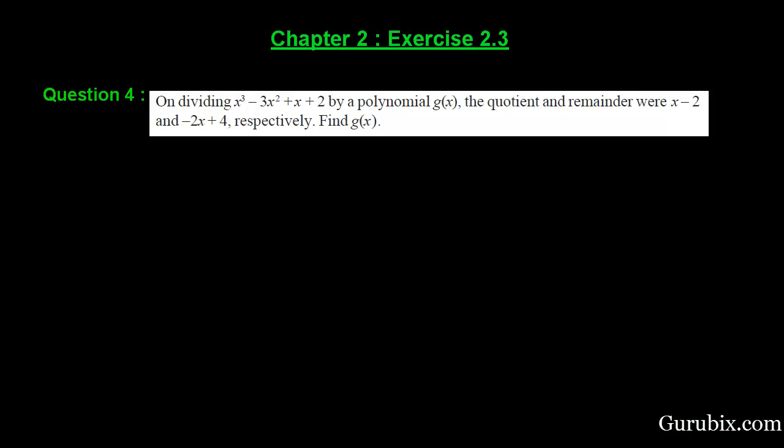Welcome friends. Let us solve question number 4 of exercise 2.3 of chapter 2. The question says: on dividing x cubed minus 3x squared plus x plus 2 by a polynomial g(x), the quotient and the remainder were x minus 2 and minus 2x plus 4 respectively. Find the divisor, meaning g(x).